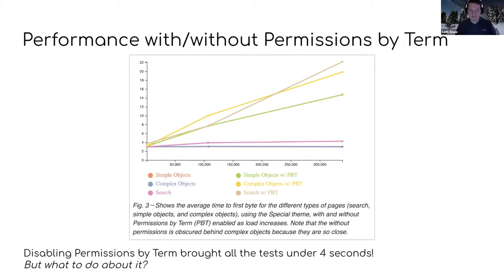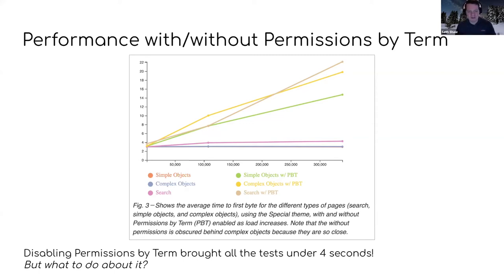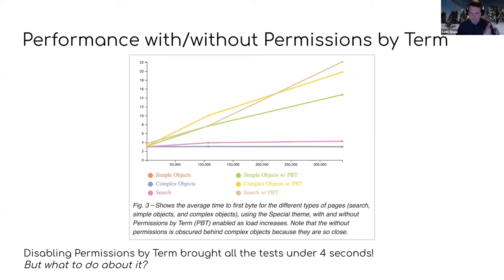Permissions by Term is the module we use to determine whether content is publicly accessible or restricted to staff only. I brought this back to my testing environment to quantify the impact. Testing different page types — simple objects (single photograph), complex objects (book with metadata and child objects), and search — you can clearly see the cluster migrating upward with Permissions by Term enabled, while everything stays under four seconds with it turned off. Drupal without Permissions by Term was handling scaling perfectly fine. Permissions by Term was the real culprit for our performance issues.